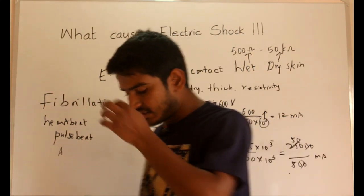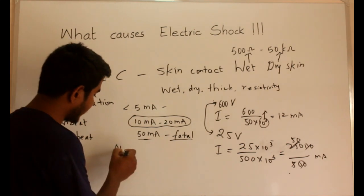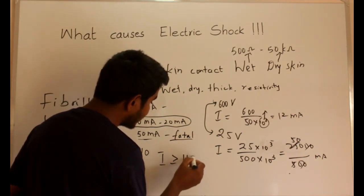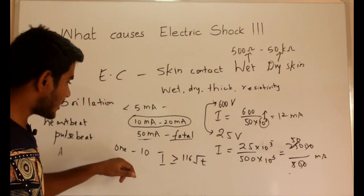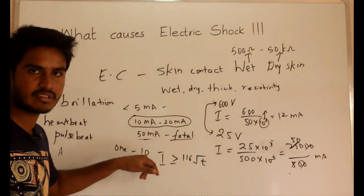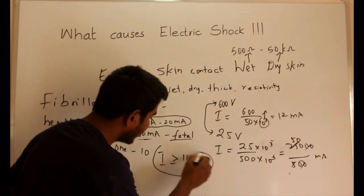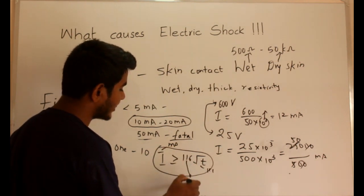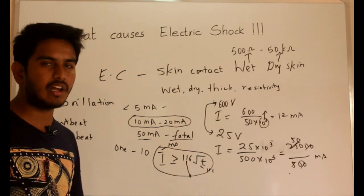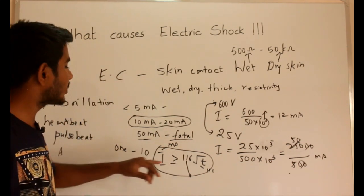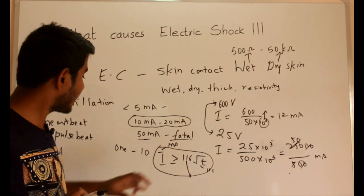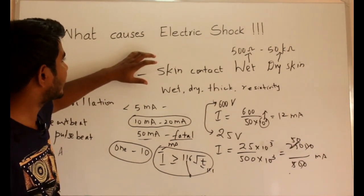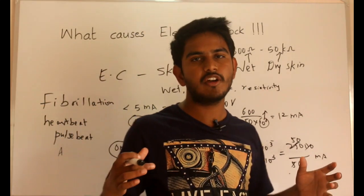Statistical investigations have also shown that there is a one-in-ten chance of death if the current satisfies the equation: I ≥ 116 / √t, where I is in milliamperes and t is in seconds, and 116 is an empirical constant expressing the probability of a fatal outcome. You can use this equation to assess whether a current level is potentially lethal. This is all about what causes electric shock — I hope you understood well, thank you.